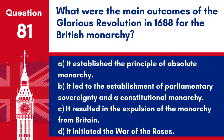Question 81. What were the main outcomes of the Glorious Revolution in 1688 for the British monarchy? a. It established the principle of absolute monarchy. b. It led to the establishment of parliamentary sovereignty and a constitutional monarchy. c. It resulted in the expulsion of the monarchy from Britain. d. It initiated the War of the Roses. Answer: b. The Glorious Revolution of 1688 was significant for establishing parliamentary sovereignty over the monarchy, leading to the development of a constitutional monarchy in Britain.